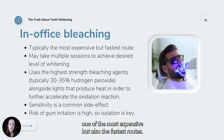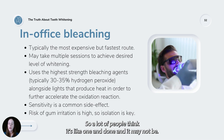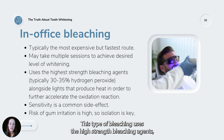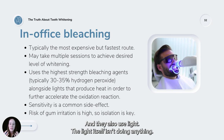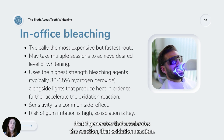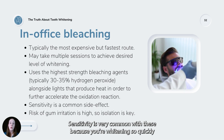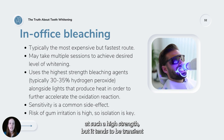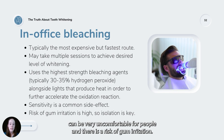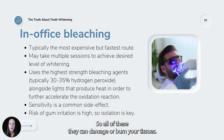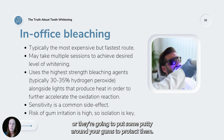In-office bleaching is the most expensive but fastest route, and may take multiple sessions. It uses the highest-strength bleaching agents — typically 30 to 35% hydrogen peroxide — and also uses lights, whose heat accelerates the oxidation reaction. Sensitivity is very common because of the high strength and fast whitening, but it tends to be transient and people are usually fine after a few days. There is no research showing long-term damage from bleaching. There is also a risk of gum irritation, so isolation is used — a rubber dam or putty around the gums.